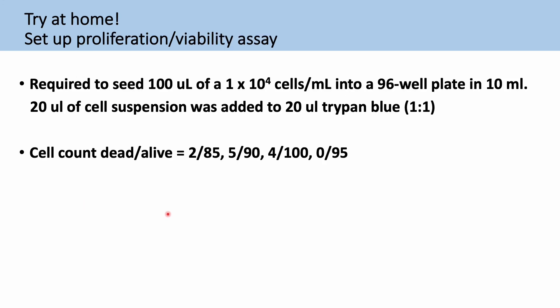So an example for you to try at home, if you were required to seed 100 microliters of a 1 by 10 to the power of 4 cells per mil into a 96-well plate with a total volume of 10 mils. You have 20 microliters of cell suspension and 20 microliters of Trypan Blue added. So that's giving you a one-to-one dilution. And these are the counts. So you need to work out how much cell suspension solution you need to seed out this plate for this experiment.